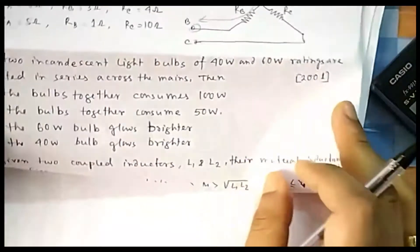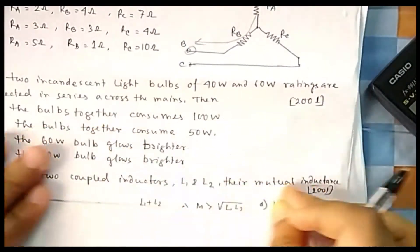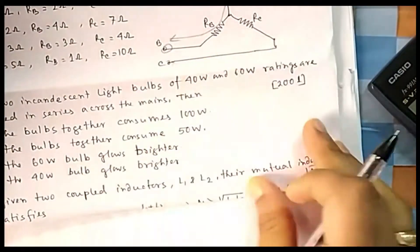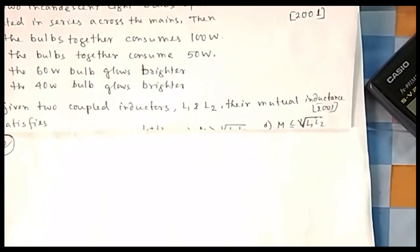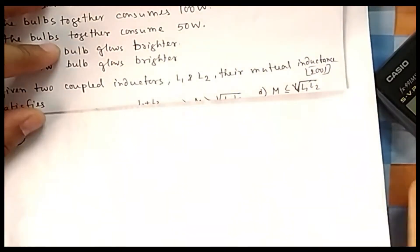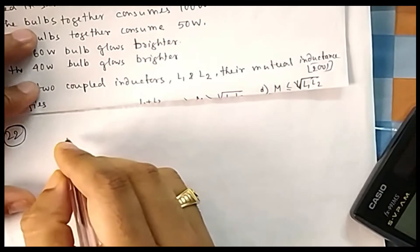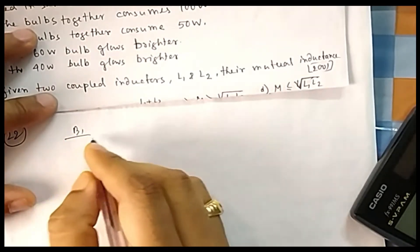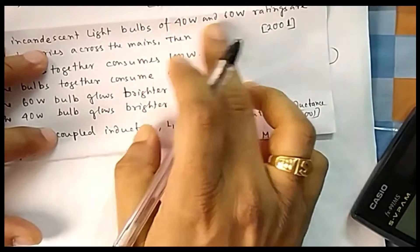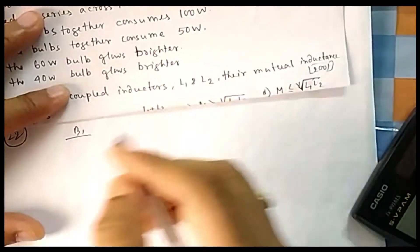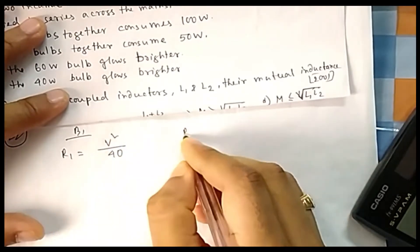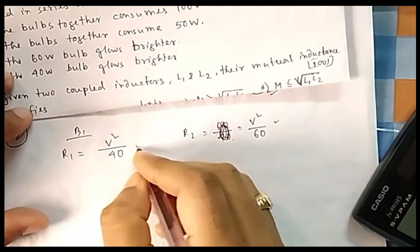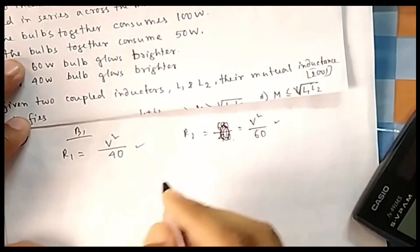Question 22: two incandescent bulbs of 60W and 40W are connected in series with the mains. For those old incandescent bulbs, the wattage is rated at a particular voltage V. So the resistance of bulb 1 is R1 = V²/40 and bulb 2 is R2 = V²/60.